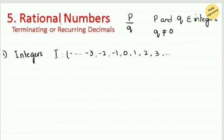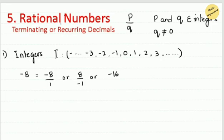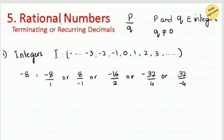The first type is integers. As you know, integers include negative, zero, and positive numbers. For example, negative 8 can be expressed in the form P over Q: it can be written as -8/1, or 8/-1, or 16/-2, or -32/4 — all simplify to -8. So numbers that can be written as a ratio are rational numbers, but remember the denominator cannot be zero.